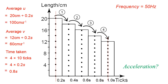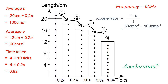Now let's move to the calculation. The acceleration formula is final velocity minus initial velocity over time. The final velocity is 60 cm/s minus the initial velocity of 100 cm/s, divided by the time taken of 0.8 seconds, giving negative 50 cm/s². Since there is a negative sign, we can see that when the length of the ticker tape strips is decreasing, it is a deceleration. When the length of the 10-tick strips is increasing, the chart represents acceleration.